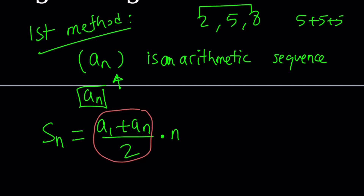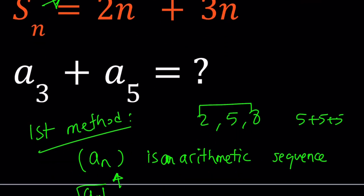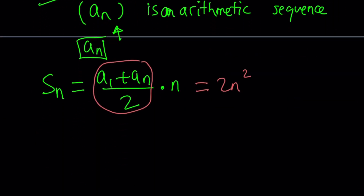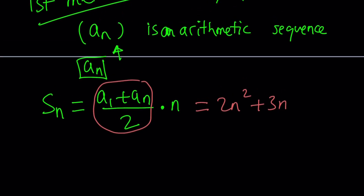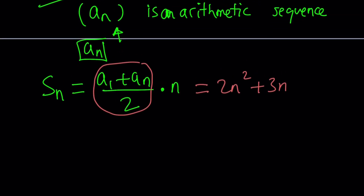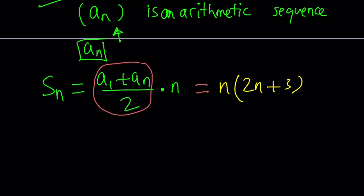This is nice because it contains an n, and we're going to set it equal to what we are given: 2n squared plus 3n. By this time, hopefully this makes more sense why it's arithmetic. Now, on the right-hand side, I can factor this and write it as n times (2n plus 3). That's nice because we know that n is not 0, so we can cancel out n and divide both sides by n.